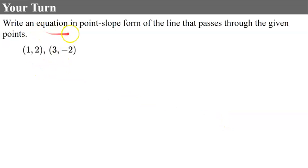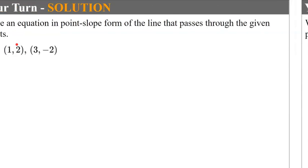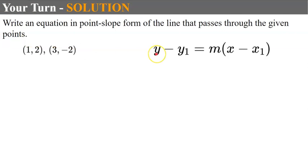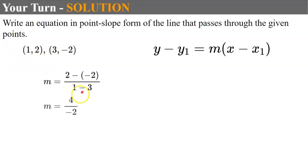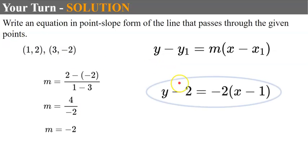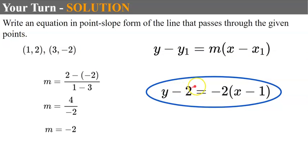Next, write the equation in point slope form through two given points. Find slope: 2 minus negative 2 over 1 minus 3 gives 4 over negative 2, or a slope of negative 2. Using the first point: y minus 2 equals negative 2 times the quantity x minus 1. If you used the second point, you would have y plus 2 equals negative 2 times the quantity x minus 3 — both are equivalent equations.